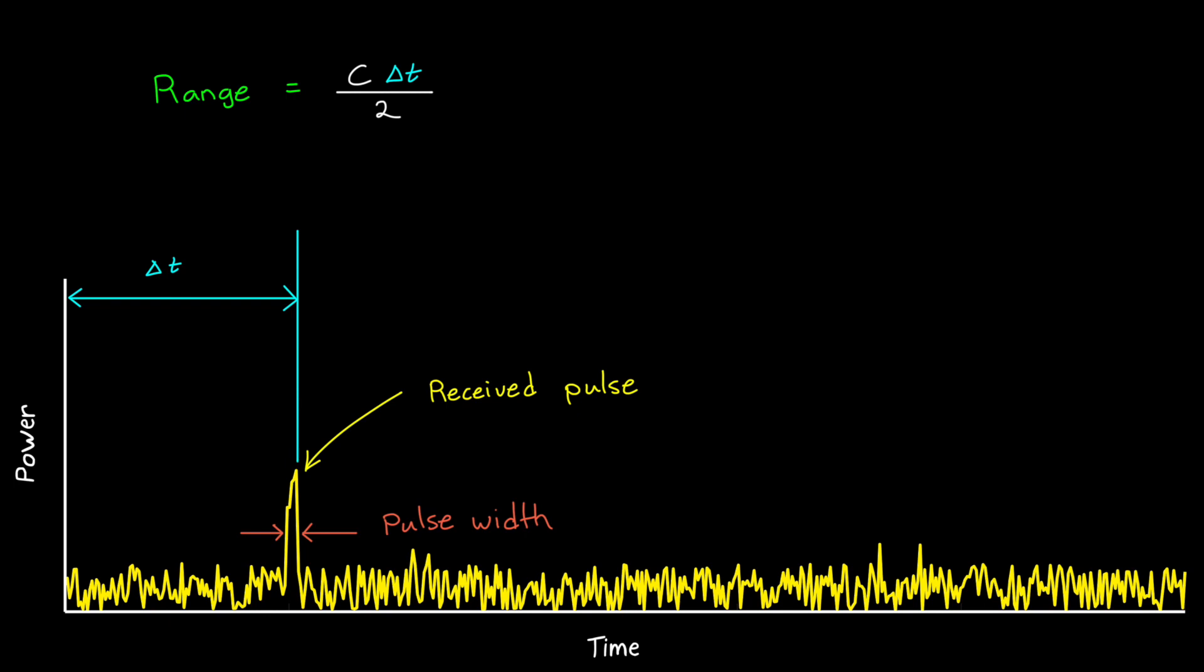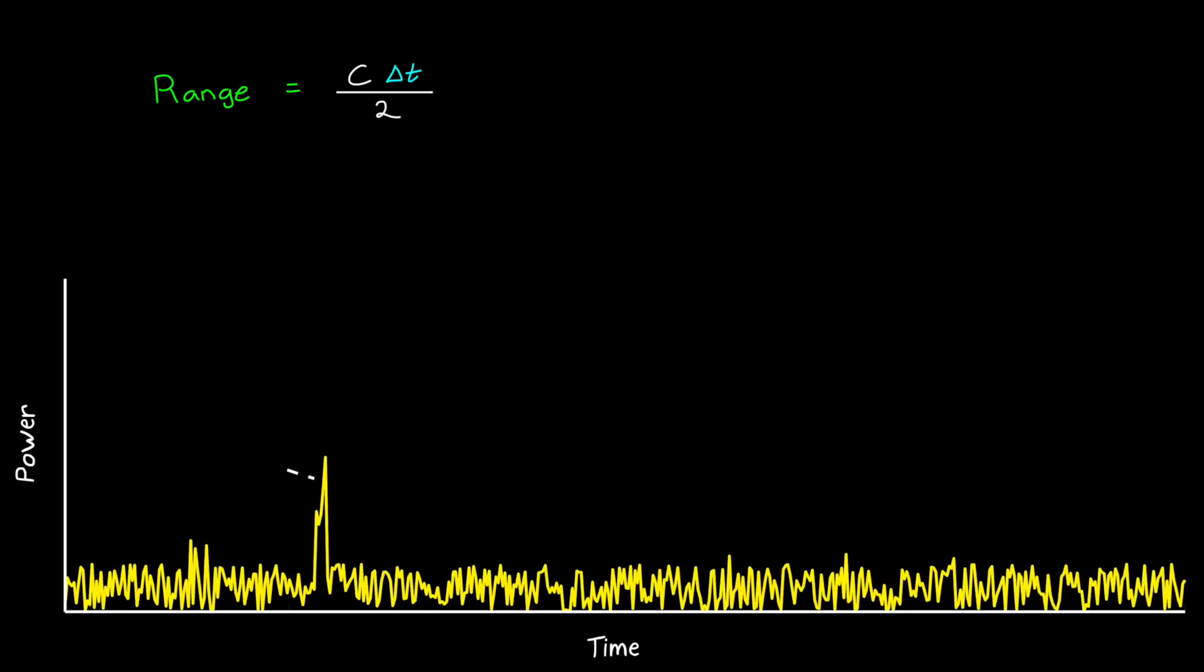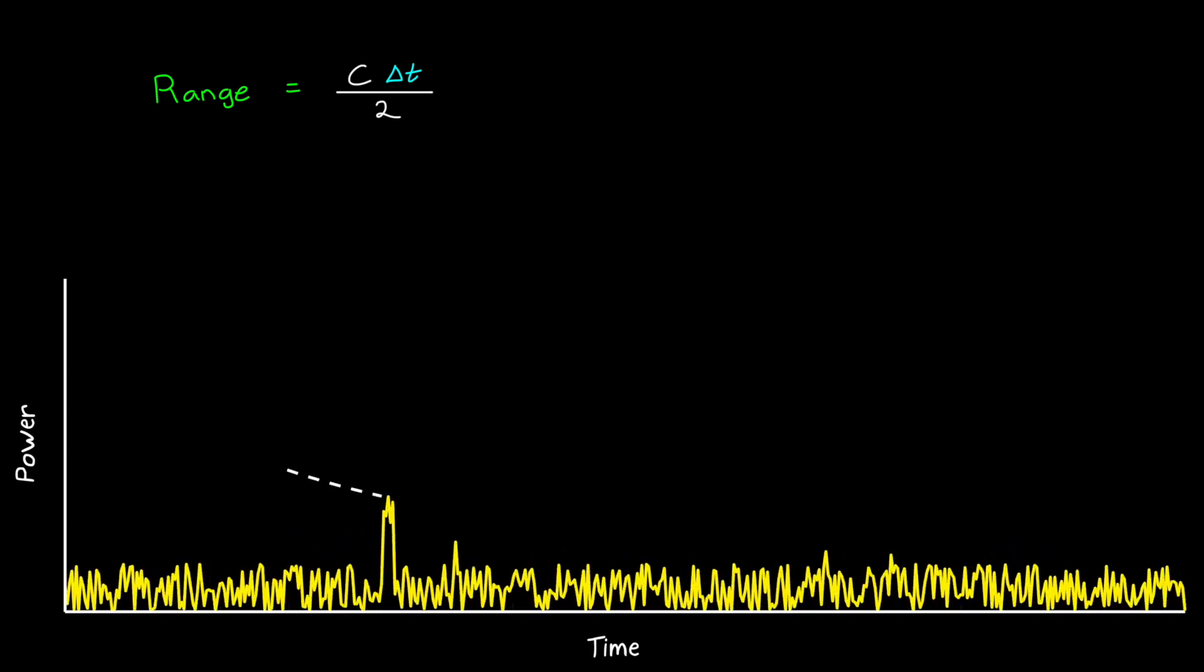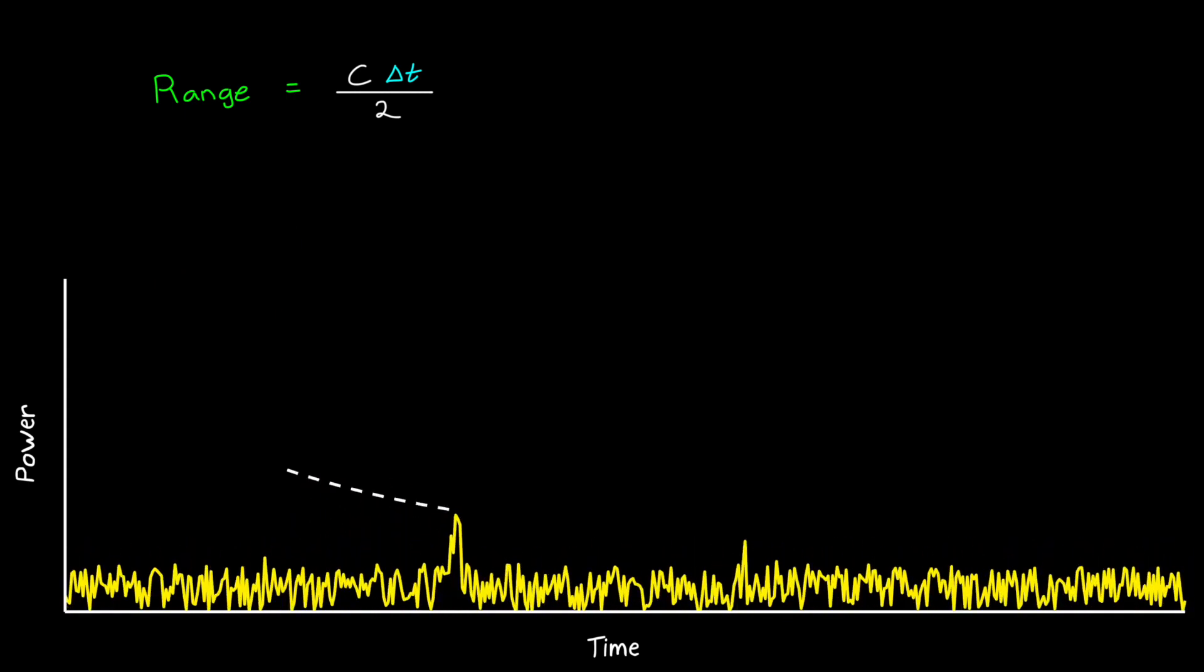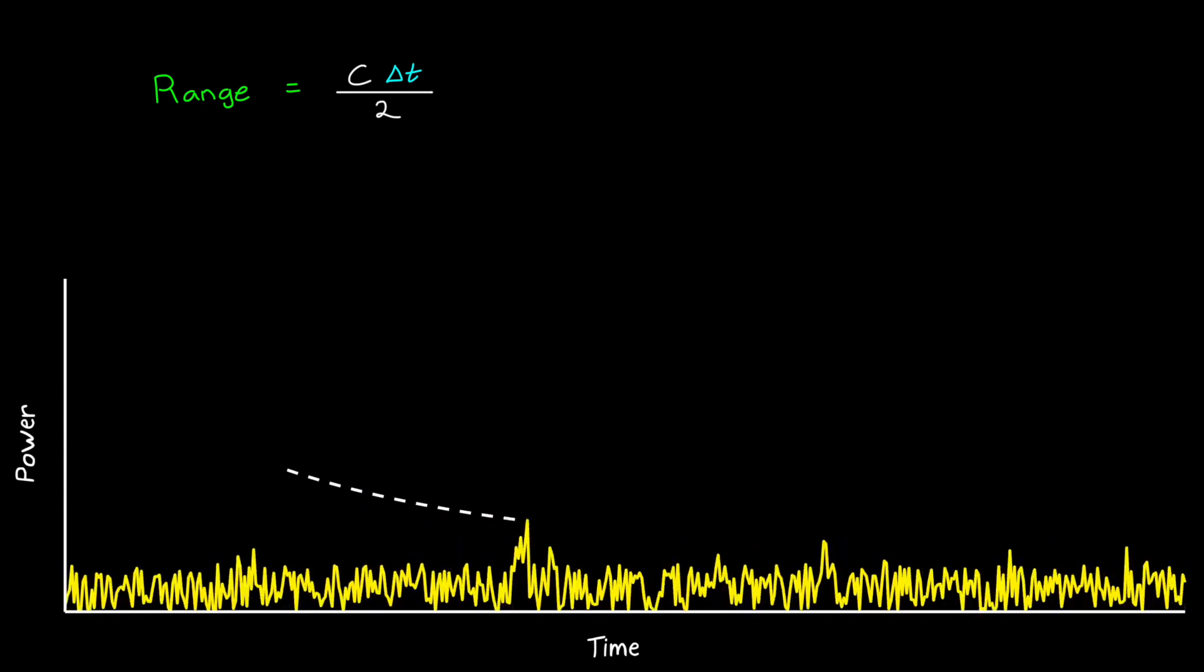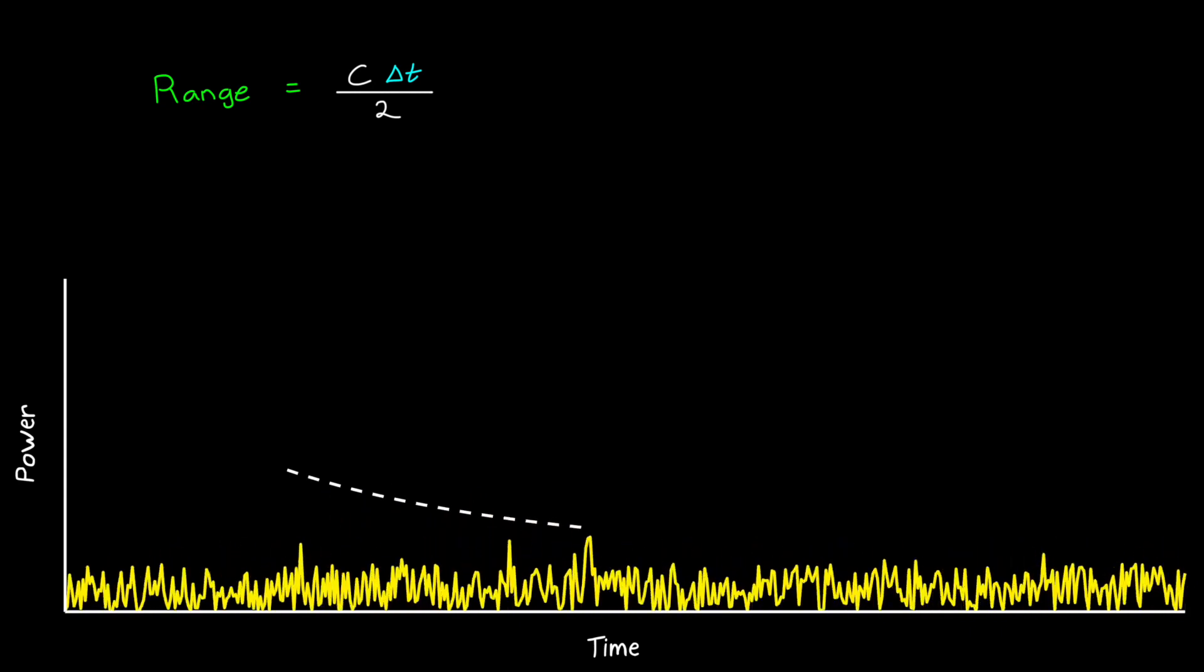Finding the pulse might not be too difficult if the object is close and the reflected signal power is really high like I'm showing here, but as we know, signal power drops by the distance to the object raised to the power of 4. So as the object gets further away, it becomes more difficult to pull it out of the noise.